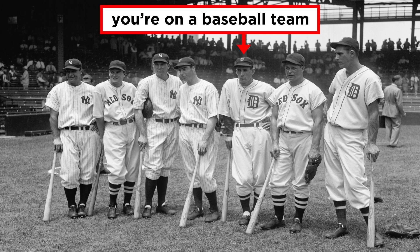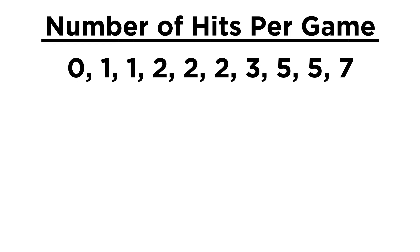Let's say you're on a baseball team, and you played ten games this season. You decided to record the number of hits you had in each game, and ordering these from least to most, you had zero, one, one, two, two, two, three, five, five, and seven hits for your best game. What are some things we can say about this dataset?